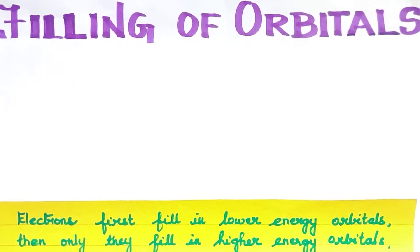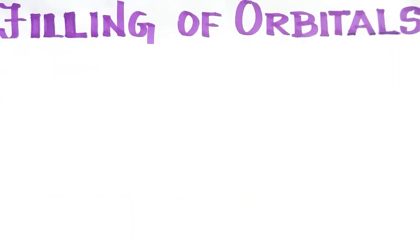According to Pauli's Exclusion Principle, one orbital can hold a maximum of two electrons. Based on the Aufbau Principle, orbitals are filled in increasing order of energy.